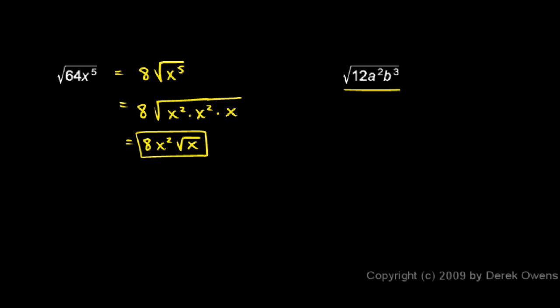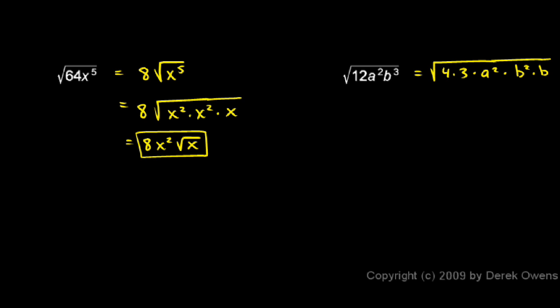Now let's look at the square root of 12a squared b cubed. Let's rewrite this. 12 is 4 times 3. I'll keep my a squared, and b cubed is b squared times b. I have the square root of 4, which is just 2. Now this 4 is accounted for — I'll underline it there to keep track of that.